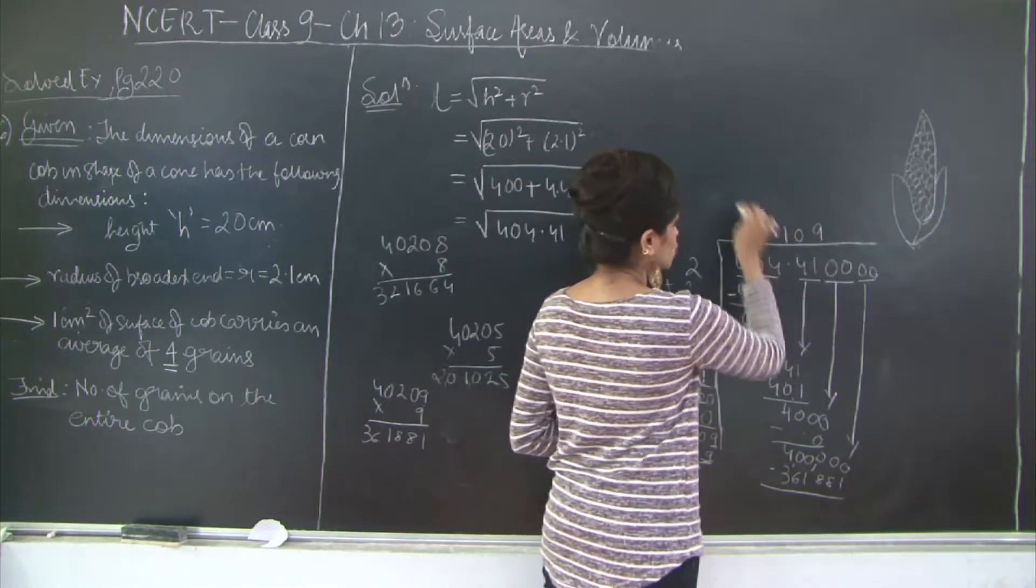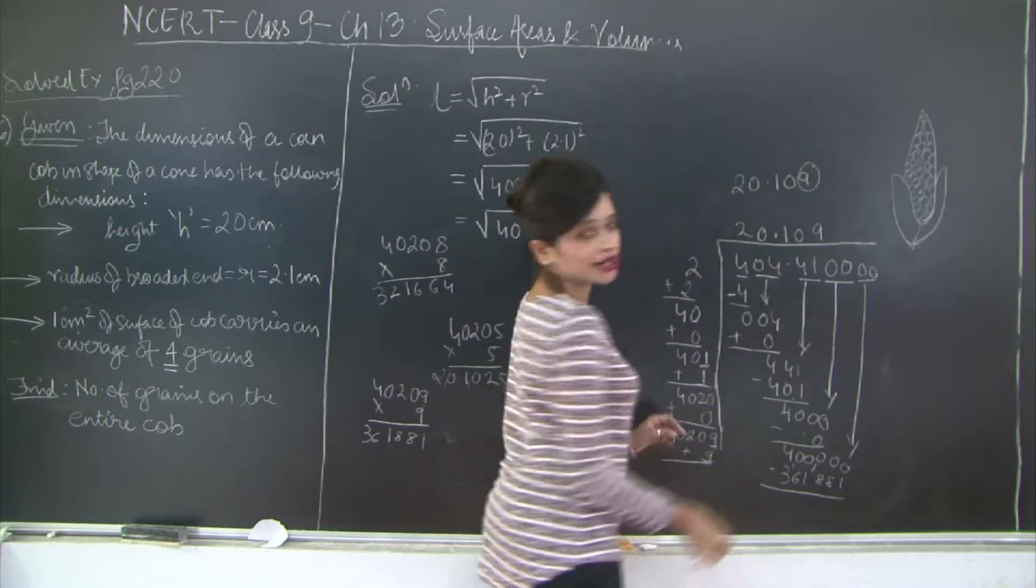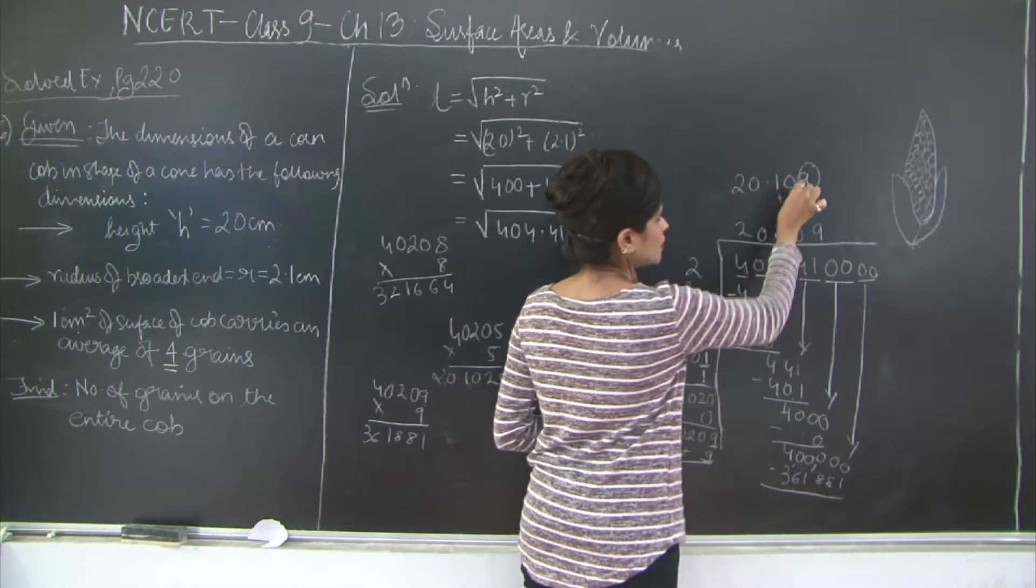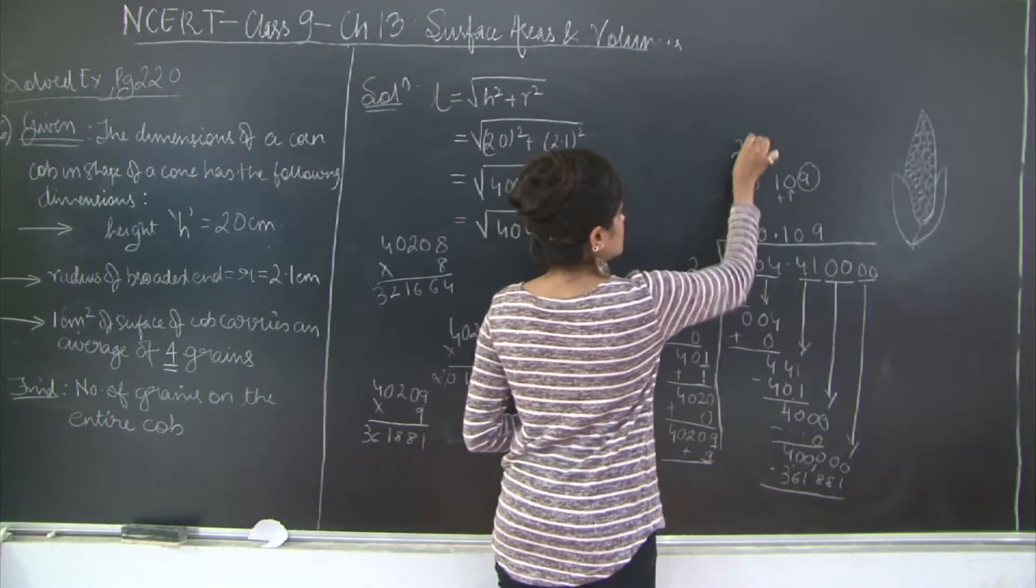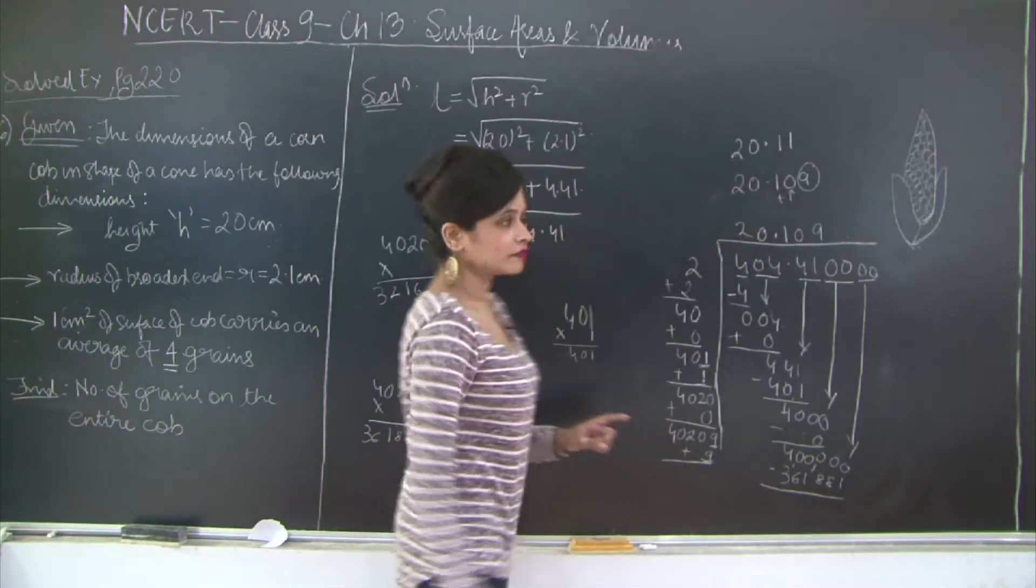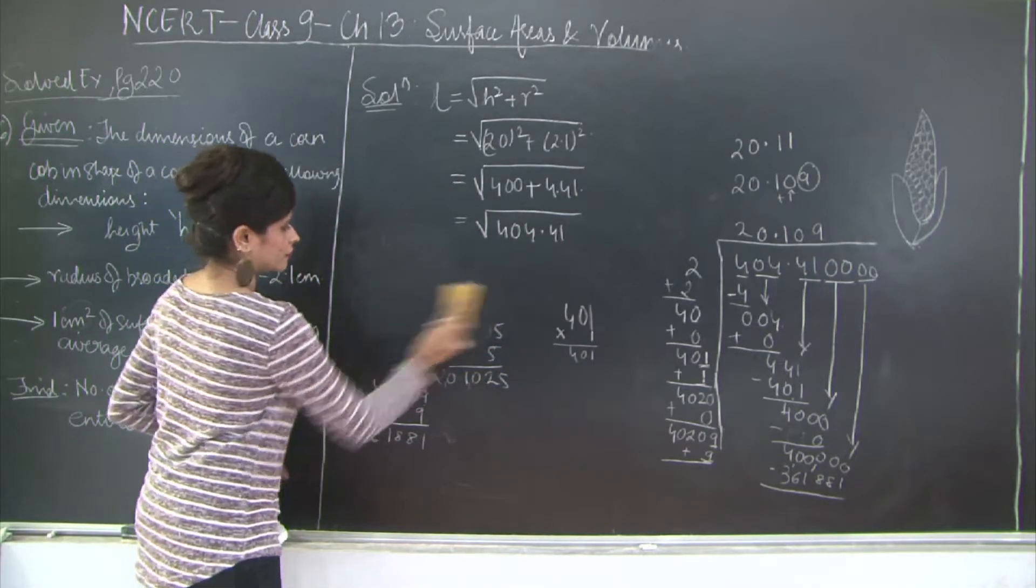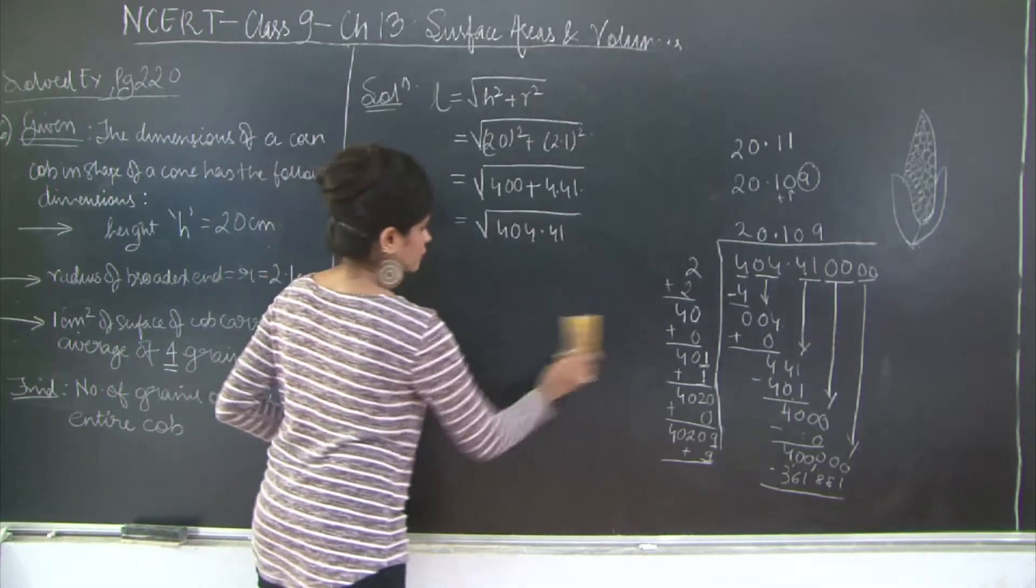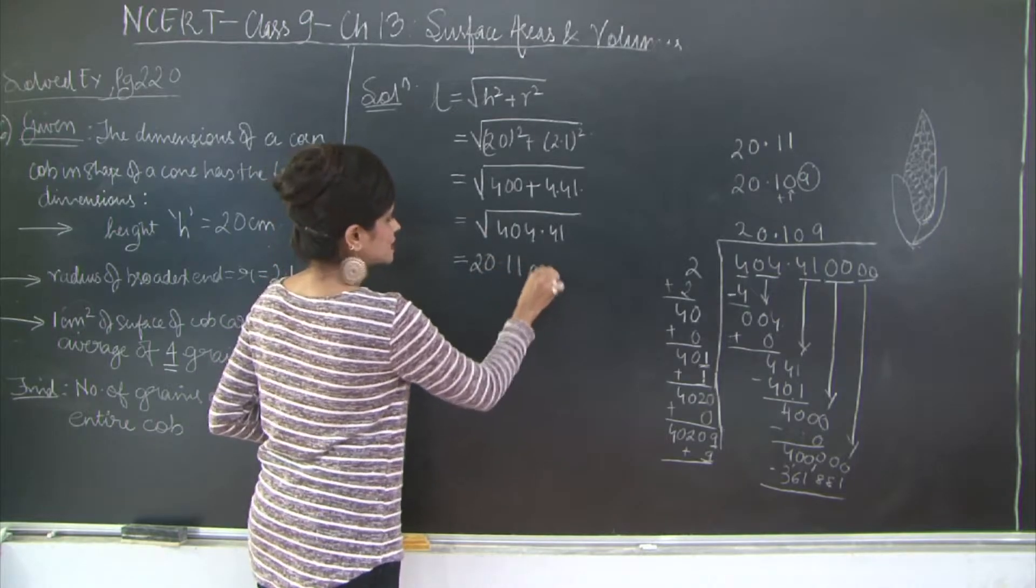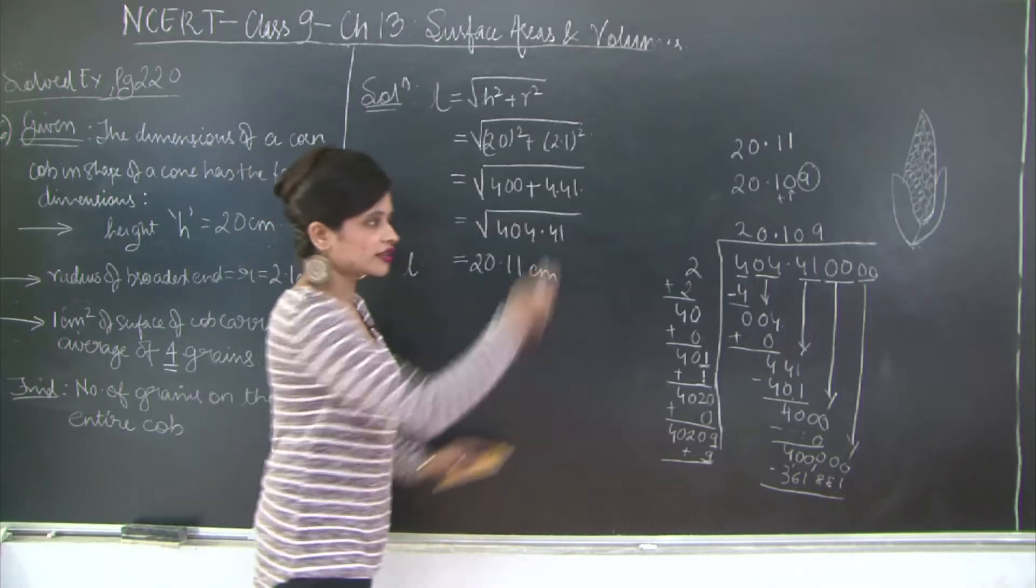What we are going to do is, see our number is 20.109. Now this number out here is greater than 5, so we are just going to add 1 to this number. So what is our solution? Finally going to be 20.11. So your length finally, our length is 20.11 cm. This is the length of the slope of your cone or this corn cob.